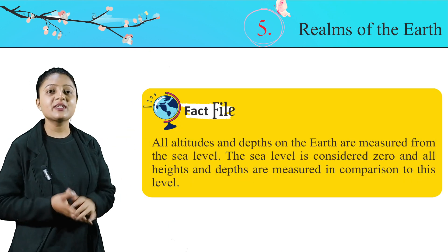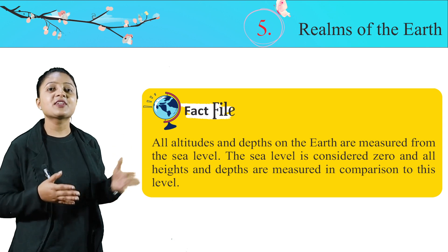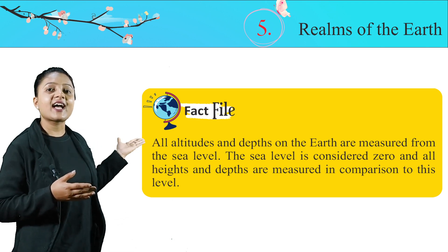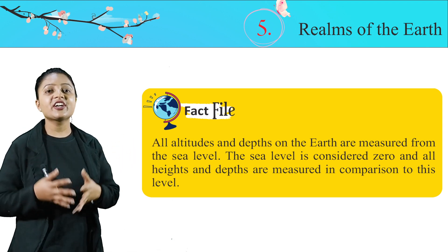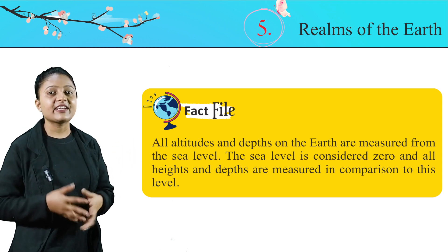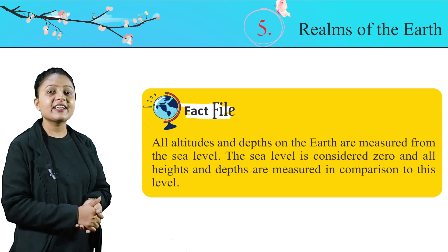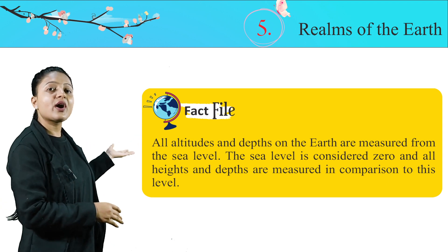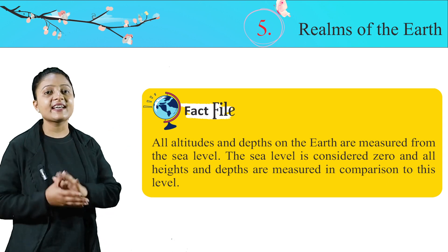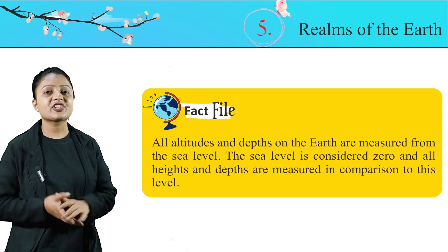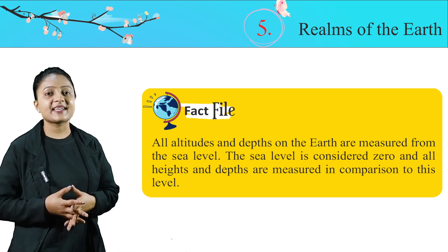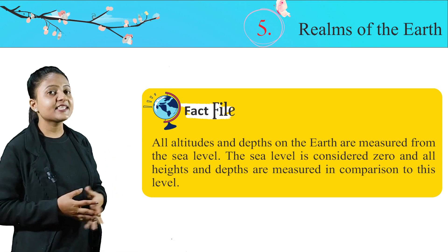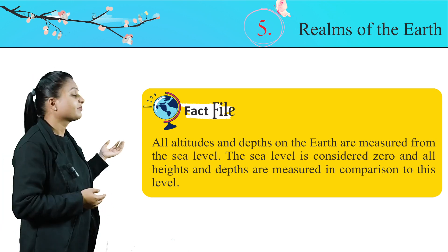Fact file: All altitudes and depths on the earth are measured from the sea level. The sea level is considered zero, and all heights and depths are measured in comparison to this level.